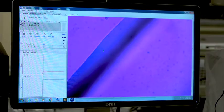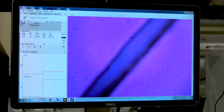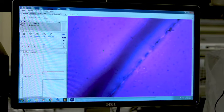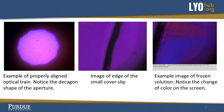Bring the sample into focus. This is most easily accomplished by navigating to the edge of the small cover slip. Here you can see an example of a properly aligned optical train as well as an image of the edge of the small cover slip. The last image shows an example of a frozen solution. Notice the change of color on the screen.